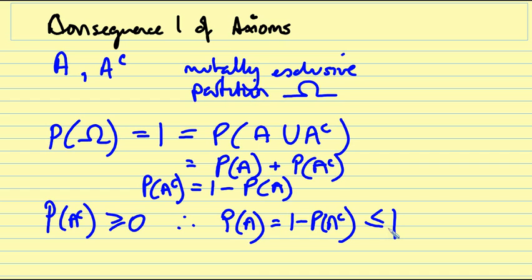So this is a consequence of the axioms. We state in the axioms that the probability of an event has to be greater than or equal to zero, and a consequence of the three axioms is that the probability of some event also has to be less than or equal to one.